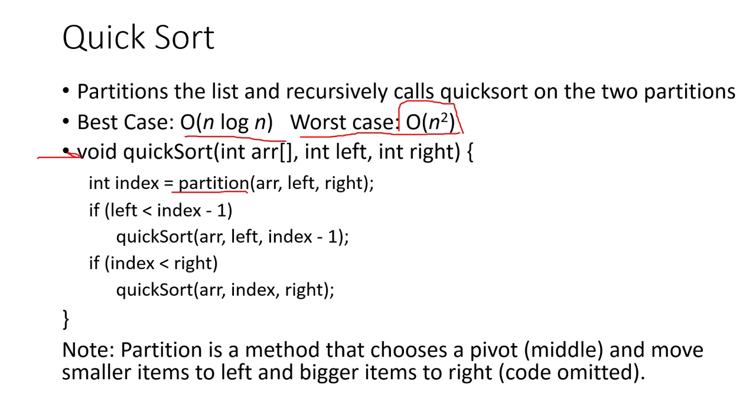So here's the code for quick sort. We first figure out our index to partition from. And then we call quick sort on the left part if the left value is less than or equal to the index minus one. Then we call quick sort on the right part if the index is less than the right part. So note that partition chooses a pivot and then move smaller items to the left, bigger items to the right. I didn't choose to include that code.